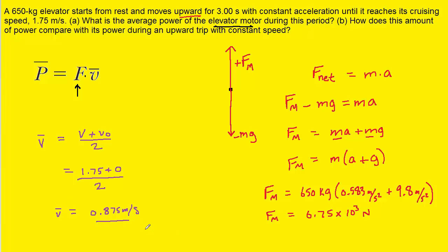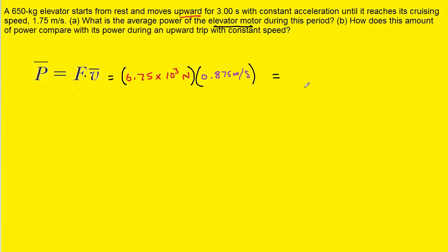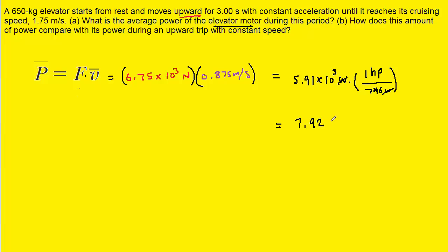We now have the motor force and the average velocity, so let's plug those into our power equation. Multiplying those values gives approximately 5.91 × 10³ watts — that's the correct answer in watts. To convert to horsepower, we use 1 horsepower equals 746 watts, the watts cancel out, and we end up with 7.92 horsepower.